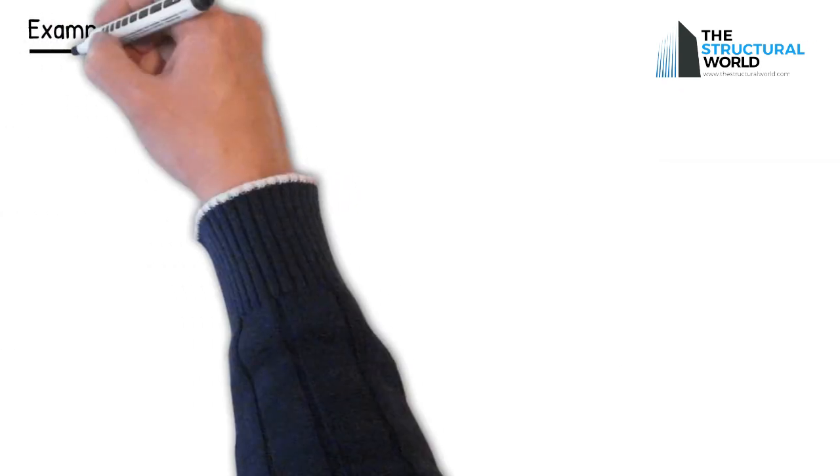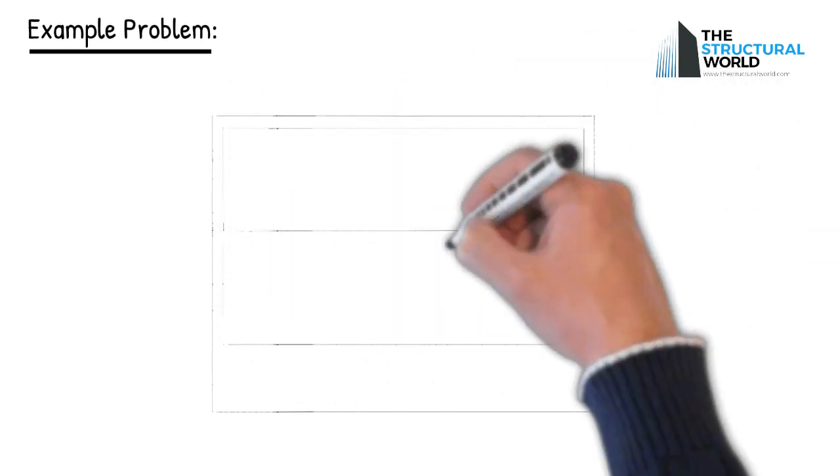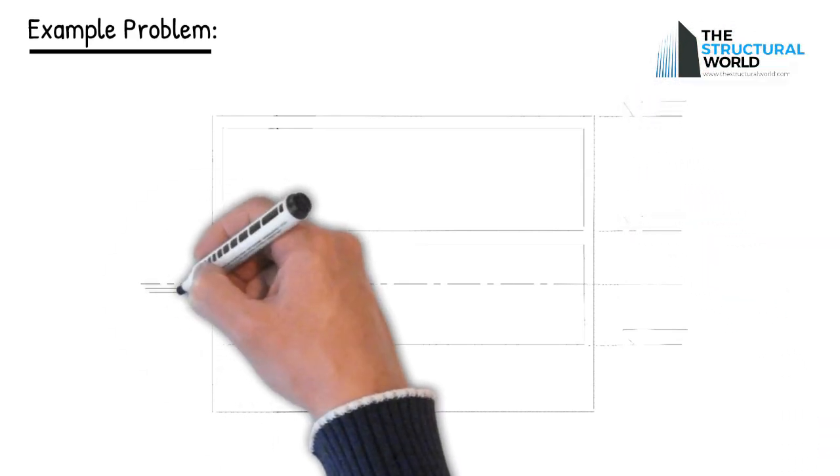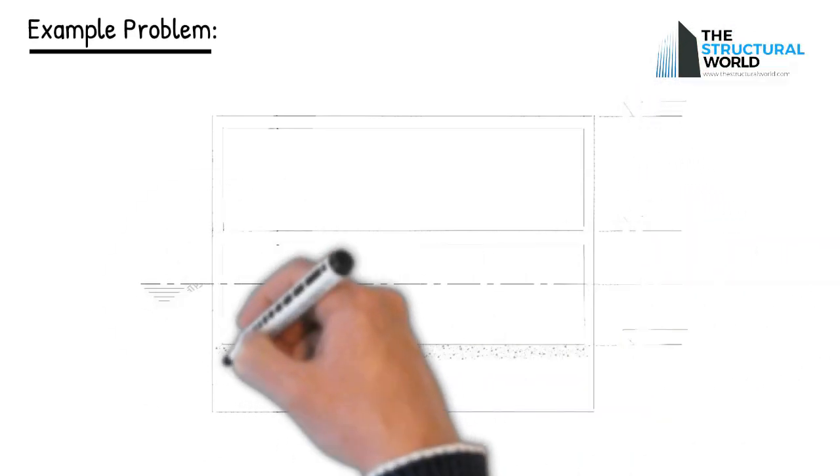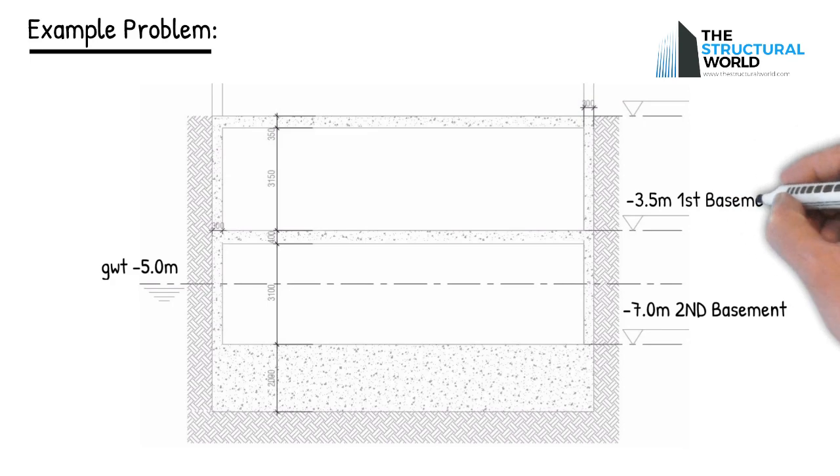Let us take a look at the sample problem below. The basement below with the raft slab thickness of 2 meters, ground and first basement slabs thick to be 0.35 meters and 0.4 meters respectively. The groundwater table was encountered at 5 meters below the natural grade level. Use unit weight of concrete to be 25 kilonewtons per cubic meter.